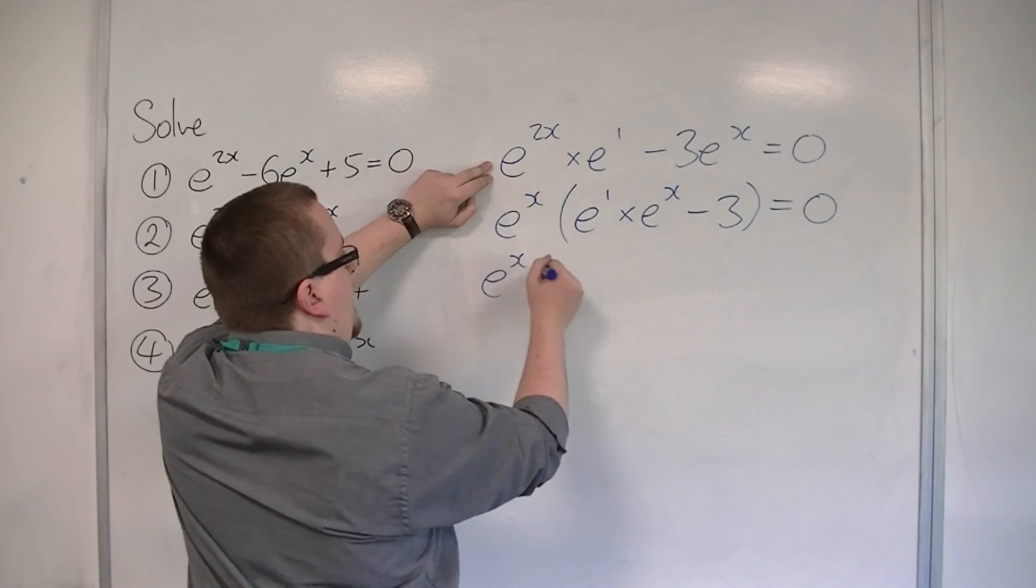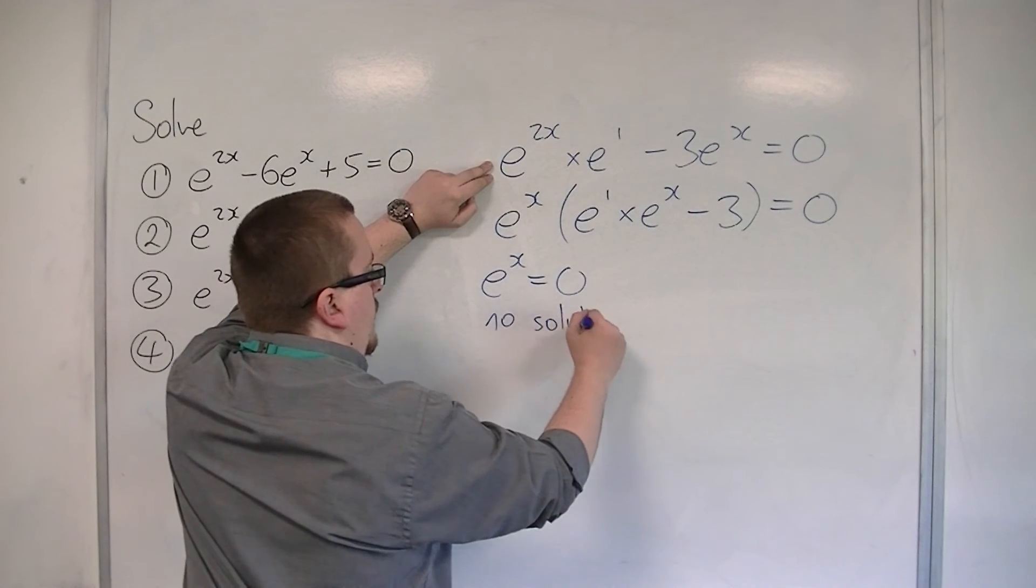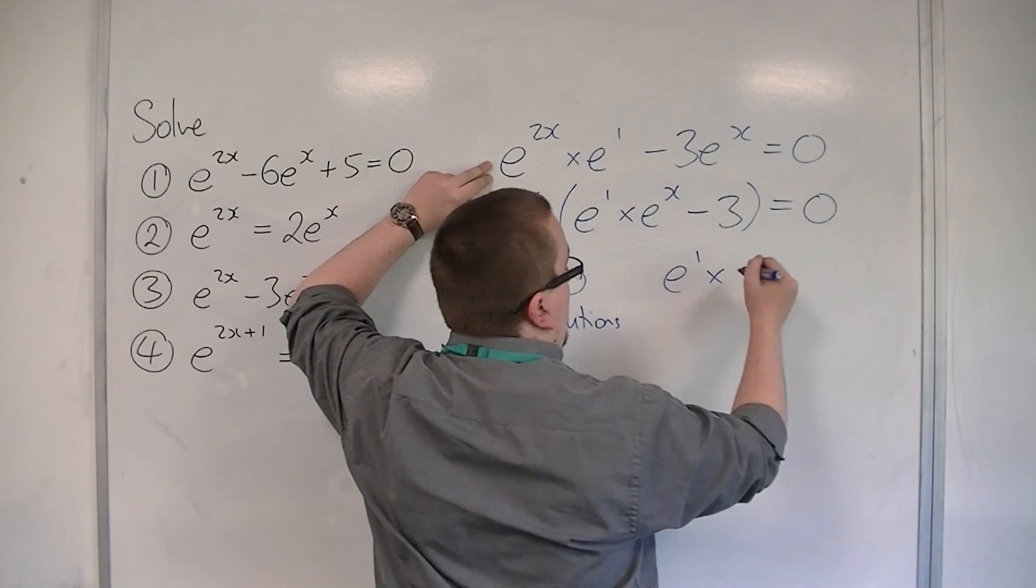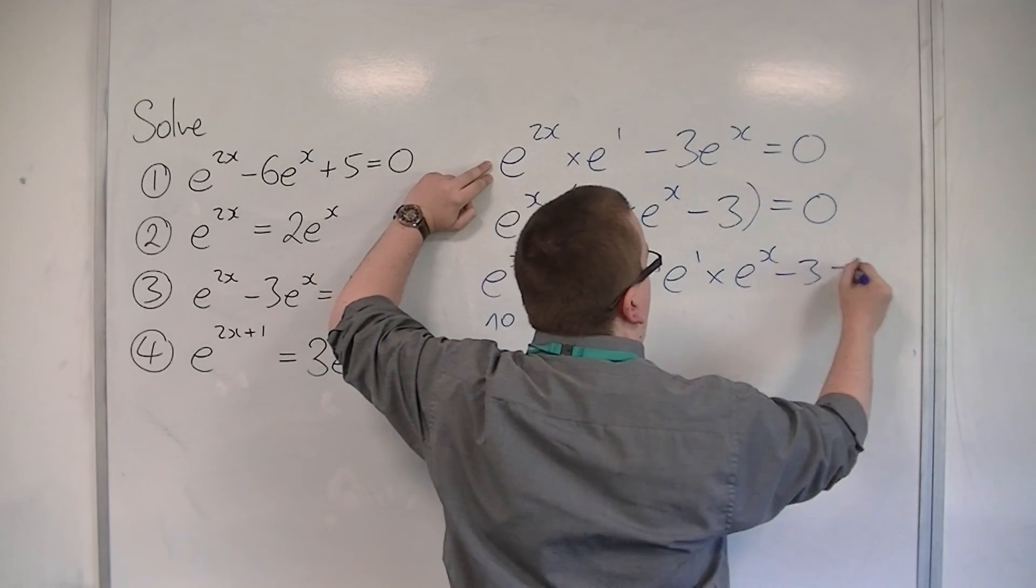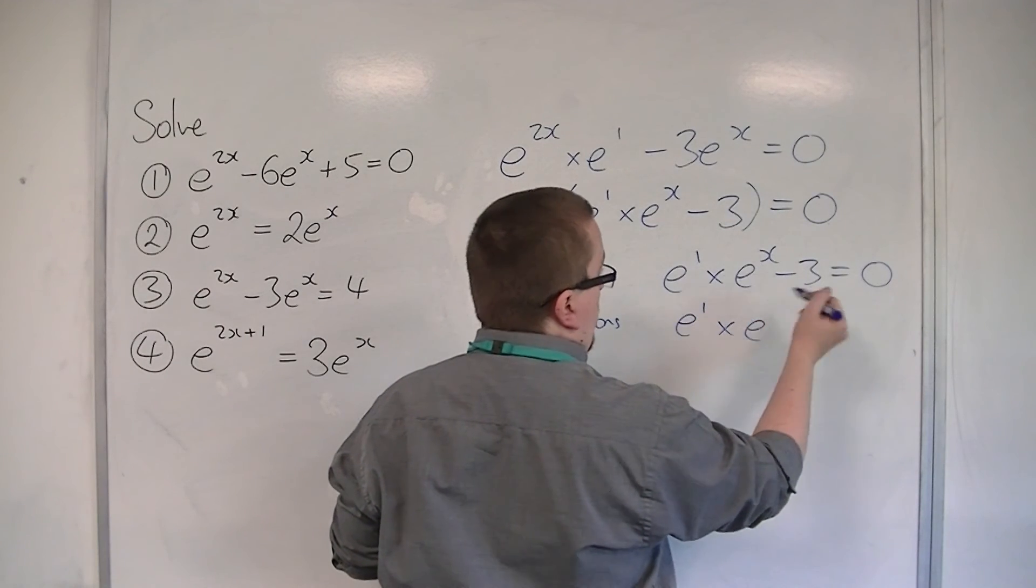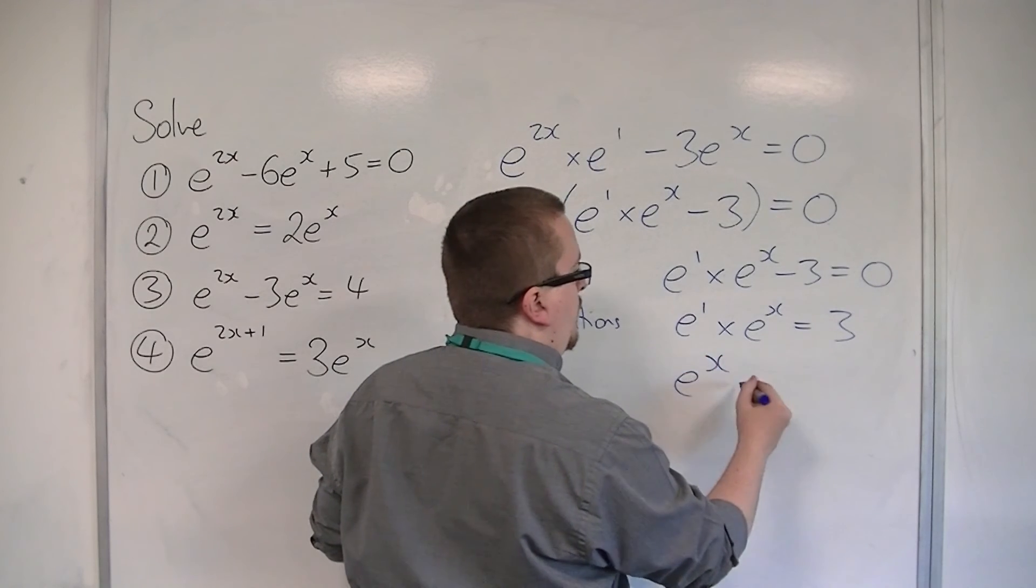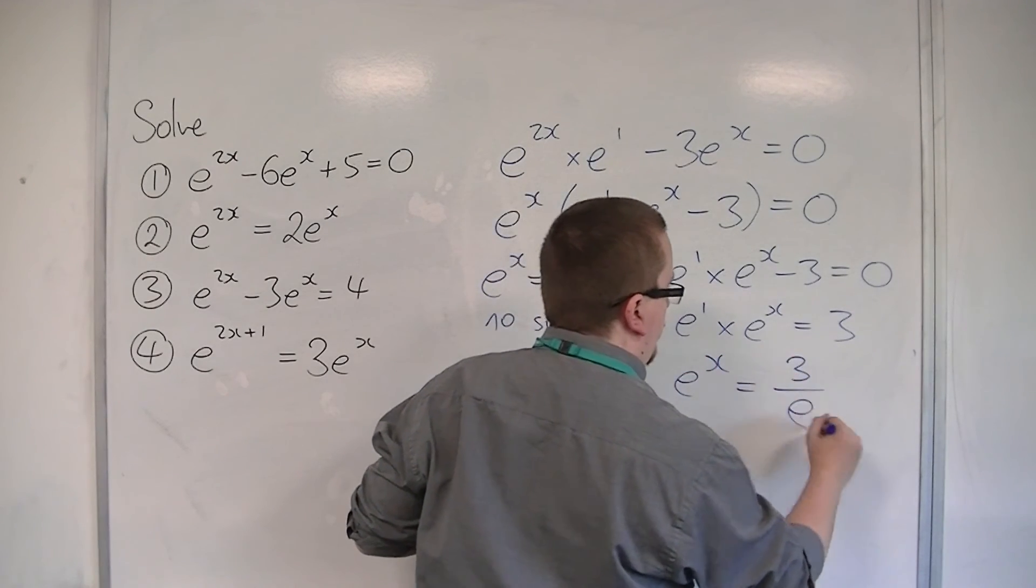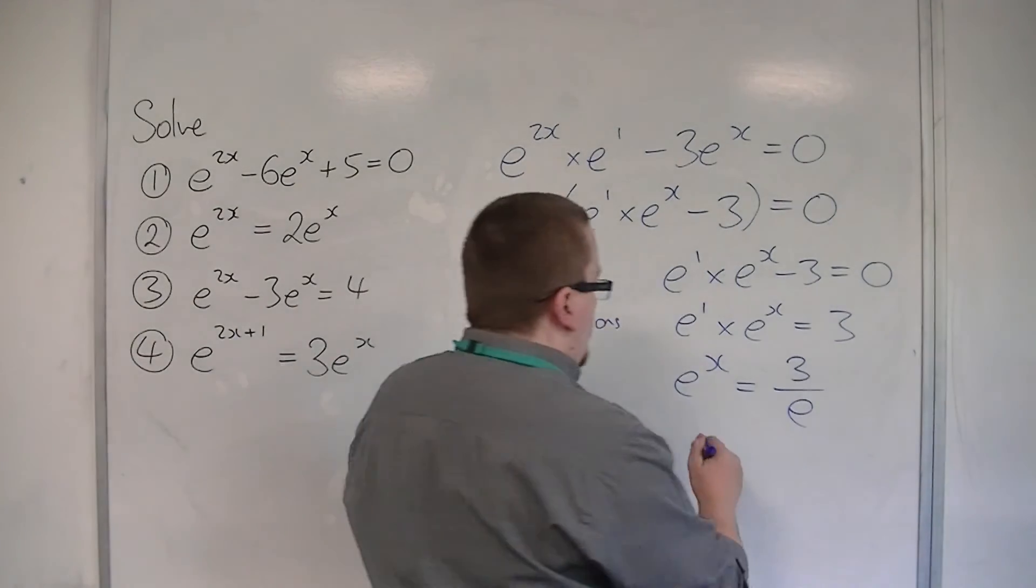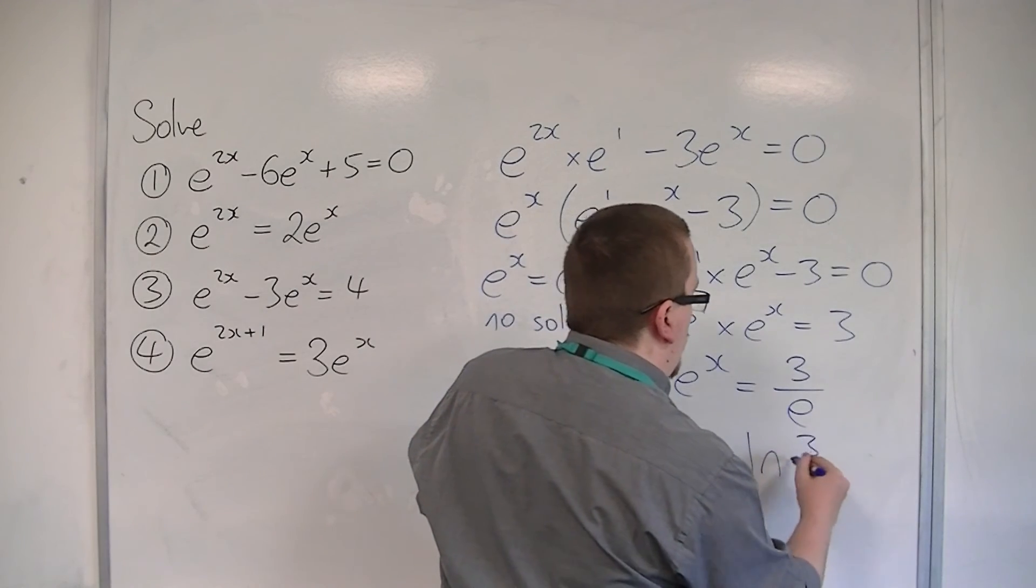So either I have e to the x equals 0, which I know has no solutions, or e to the 1 times e to the x minus 3 is 0. So if you add the 3 to both sides, and then divide both sides by e, or e to the 1, then you can take logarithms of both sides, so x is log of 3 over e.